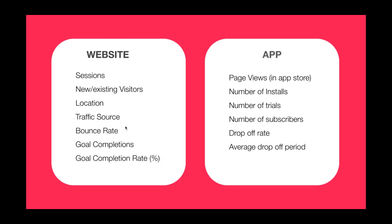Within the app store, if you are selling an app, you'd want to look at page views, number of installs, and number of trials. That means once someone installs the app — if you offer a free trial — how many people actually commence their trial? Believe it or not, people do download apps but don't take that next step to start the trial. You want to see how many step into the trial, and then upon completion of the trial, how many sign up as ongoing subscribers. Track the drop-off rate from trials to subscribers, and also how long you keep subscribers before they drop off — your average drop-off period.